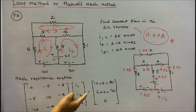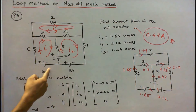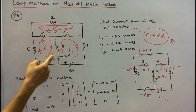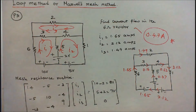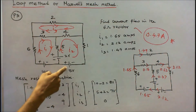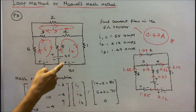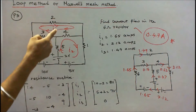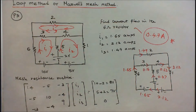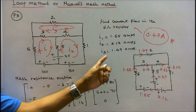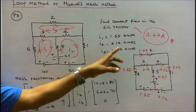The matrix equation gives: I1, I2, I3. V1: the voltage sources in loop 1 are plus 10 minus 2 = 8 volts. V2: the voltage sources in loop 2 give 5 plus 2 = 7 volts. V3: there is no voltage source in loop 3, so V3 = 0. Solving: I1 = 1.65 amps, I2 = 2.12 amps, I3 = 1.49 amps.